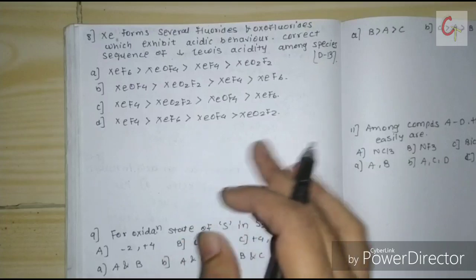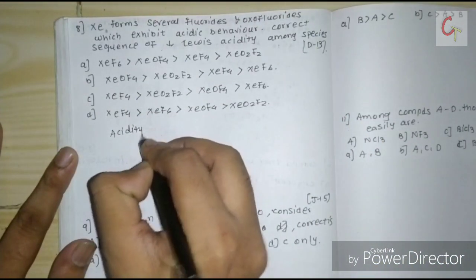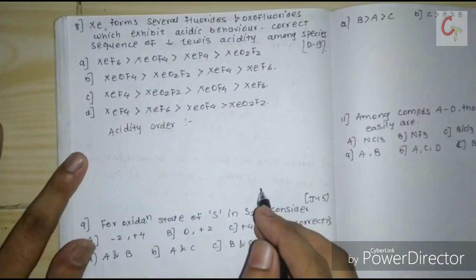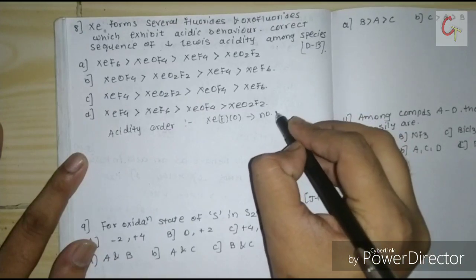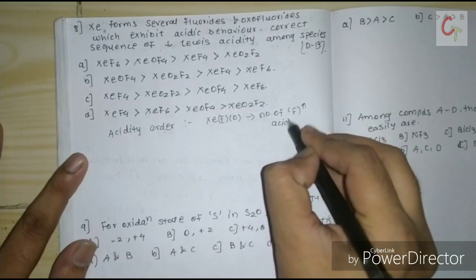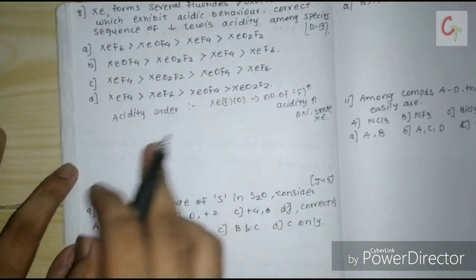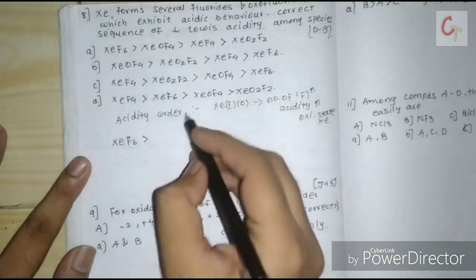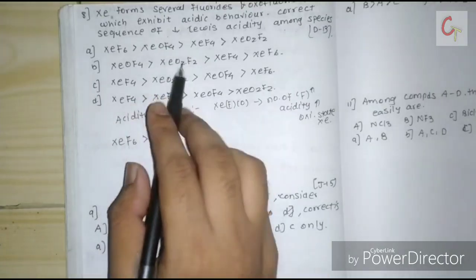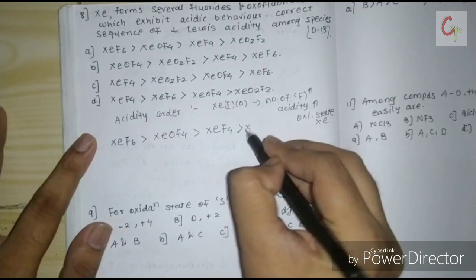Next: xenon forms several fluorides and oxofluorides — give the correct decreasing order of Lewis acidity. More fluorine atoms corresponds to higher acidity, and the oxidation state of xenon also matters. The compound with the highest number of fluorine atoms (six) will be most acidic, followed by compounds with five fluorines, then xenon oxofluorides, then xenon tetrafluoride (XeF4).